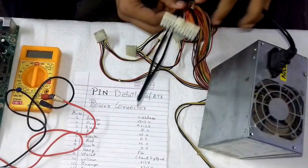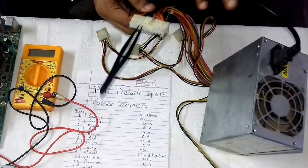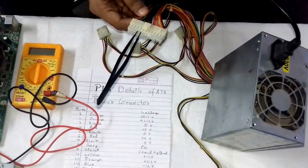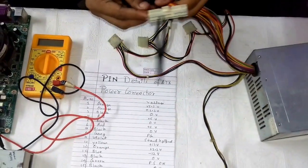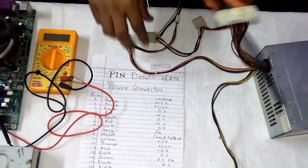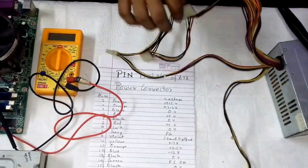We have just shorted the green wire with black wire, and the CPU and the SMPS fan goes running. This proves that the SMPS is working. Now let us check if the desired voltage is coming out through these connectors or not.